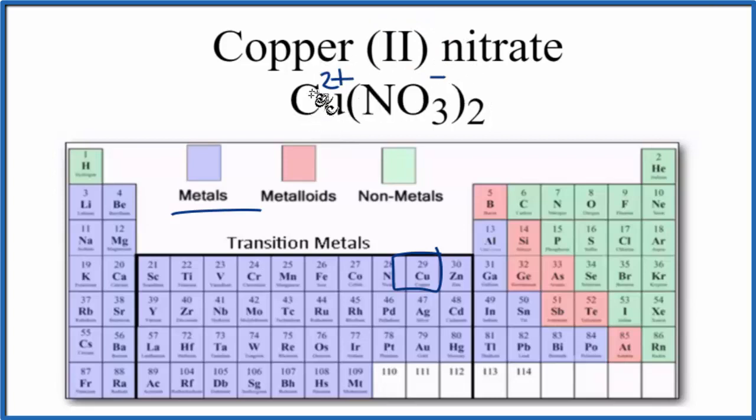So we have the positive copper ion and then two negative nitrate ions. Positive and negative, they attract. That gives us the ionic compound for Cu(NO3)2.